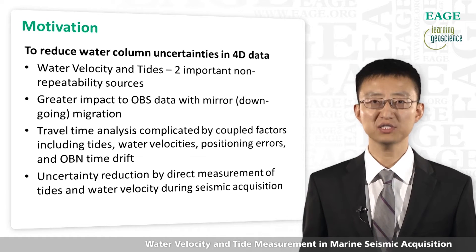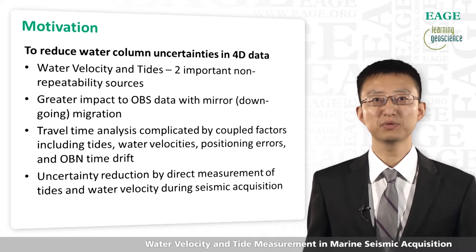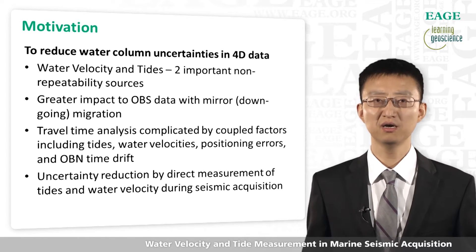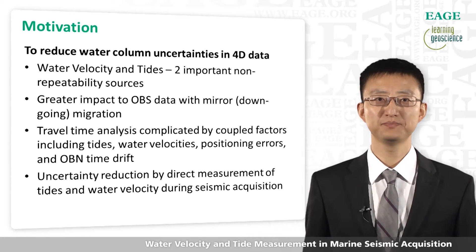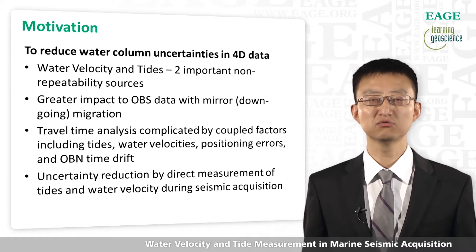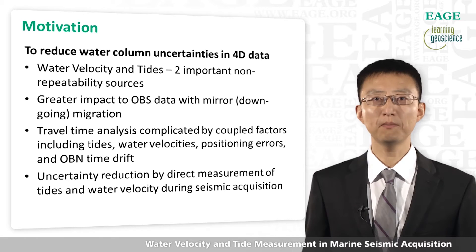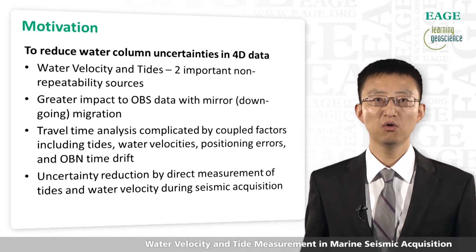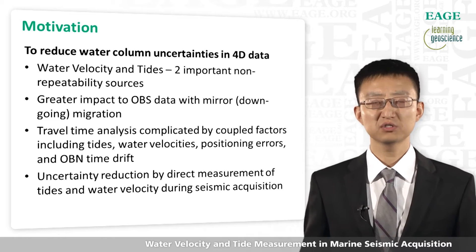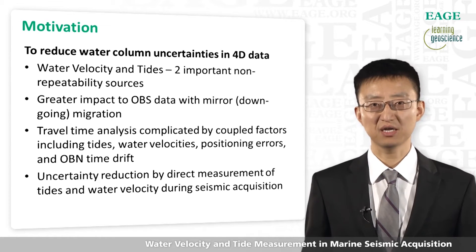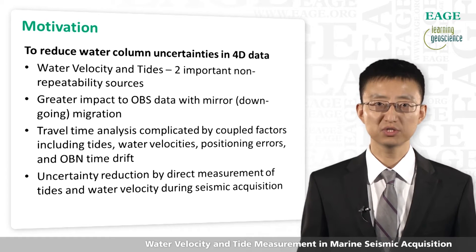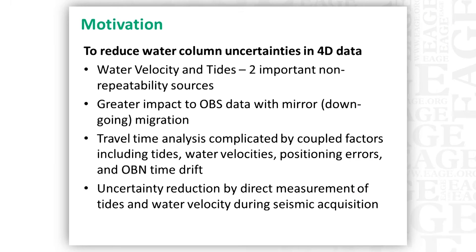Water properties here means the water velocity and the tidal variations in a survey and between different surveys. Water property impact is particularly important for ocean-bottom seismic, because mirror migration or multiple migration is often used in this data, so seismic energy has additional ray paths in the water layer. Usually, people use travel time analysis to estimate such uncertainties, but this process is often complicated by coupled factors including tides, water velocities, positioning errors, or time drift if you use ocean-bottom nodes. These factors often generate similar time-shift effects in seismic data and are very hard to separate. So if we can directly measure some of them, the uncertainties will be greatly reduced and the travel time analysis will be improved.